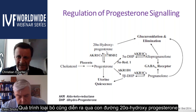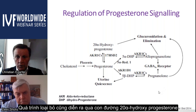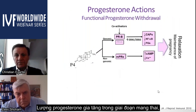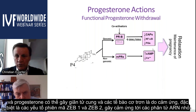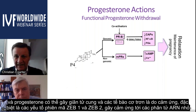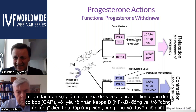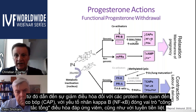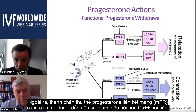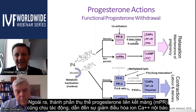Progesterone increases during pregnancy, and its relaxation of uterine smooth muscle is due to induction of transcription factors ZEB1 and ZEB2, leading to microRNA induction, which in turn down-regulates contractile-associated proteins, the master inflammatory switch NF-κB, and prostaglandins. The membrane-bound progesterone receptor component also leads to down-regulation of intracellular calcium.